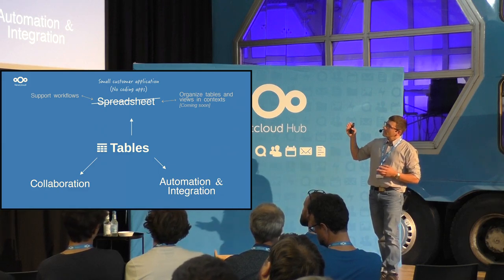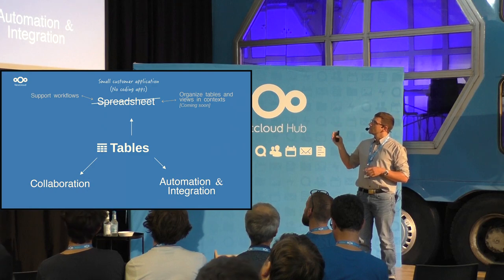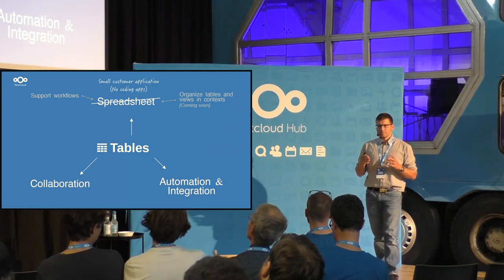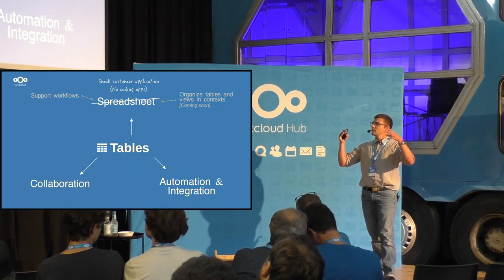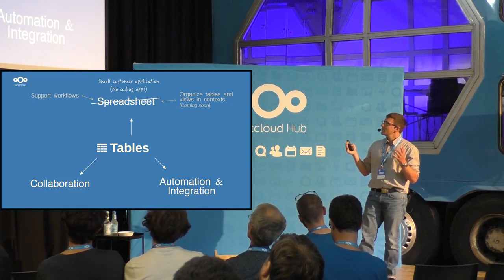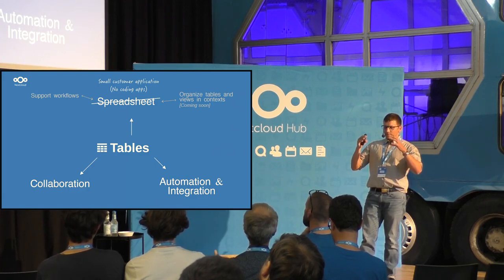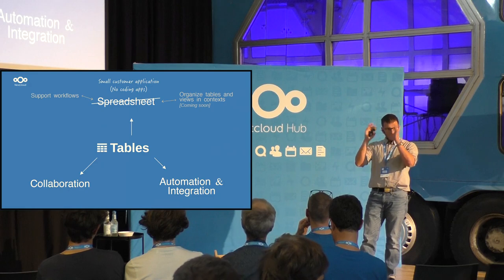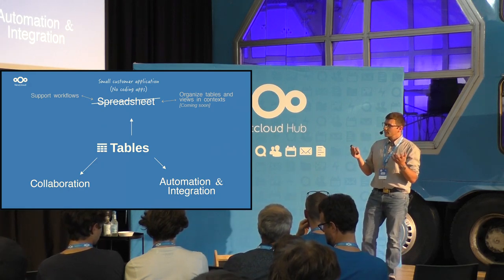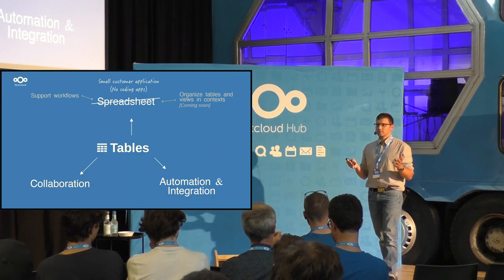The next thing I'm working on is organizing tables, views, and maybe even single rows into one context, bringing all the assets together. I call it a context — maybe you have a better name, just talk to me. You give it an icon in the menu bar and you can build your own small application on the front end within your Nextcloud context.